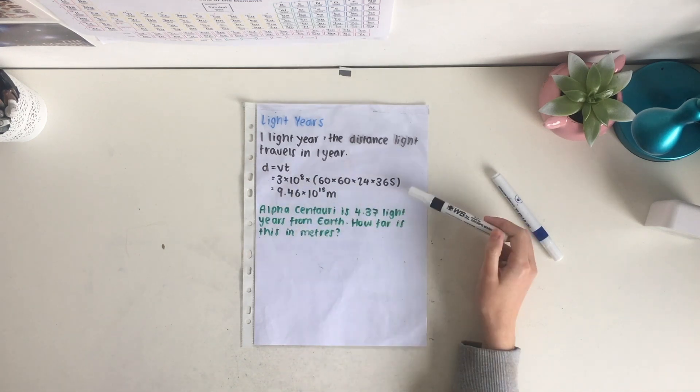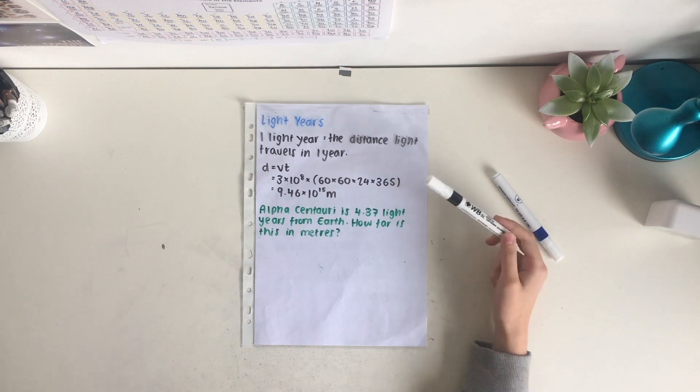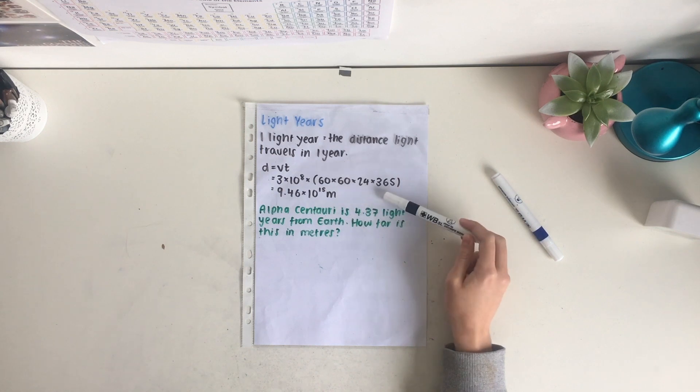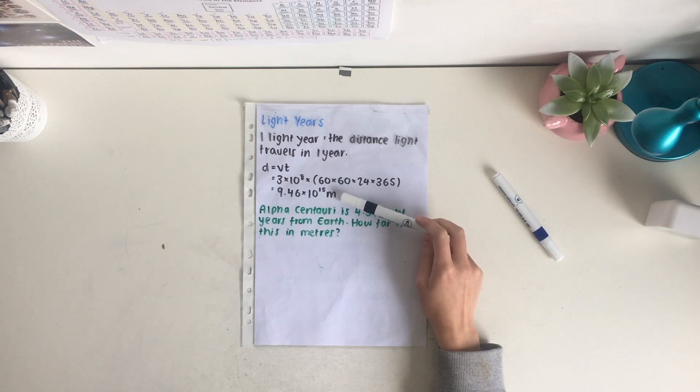three times ten to the eight, and the time we have to work out in seconds. So we do 60 times 60 to get minutes, times 24 for hours, and 365 to get 365 days in a year. This gives us a value for a light year of 9.46 times 10 to the 15 meters.